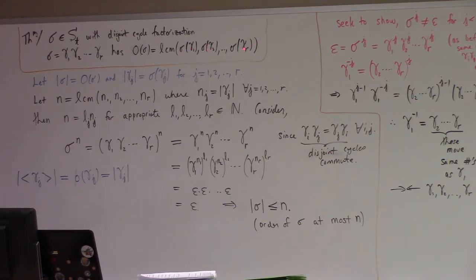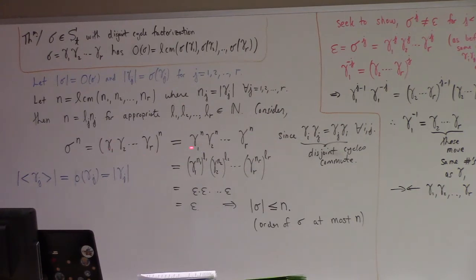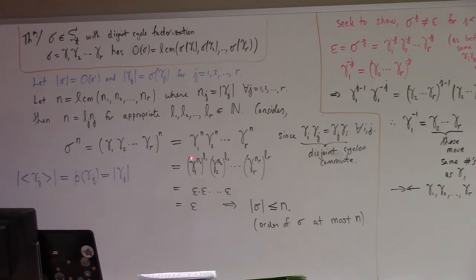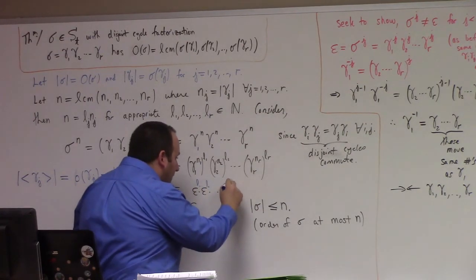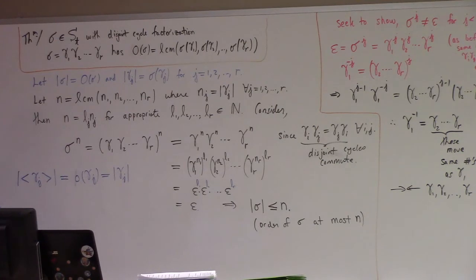If you calculate the Nth power of sigma, then because disjoint cycles commute, we have the nice law of exponents: this to the N is the first thing to the N times the second thing to the N, and so forth. If they don't commute you can't do this, but if they do commute, we can. Then each N can be written as L1·N1 or L2·N2, and factoring allows us to use the fact that the order of gamma one is N1 — meaning gamma one to the N1 is epsilon. The identity to any power is the identity again.